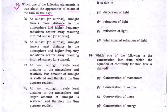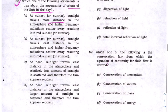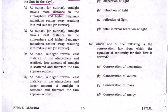Moving to question 86: which statement is true about the color of the sun in the sky at sunset or sunrise? The first option says that at sunset, sunlight travels more distance in the atmosphere and higher frequency radiations scatter away, resulting in red color. Let's evaluate the options.